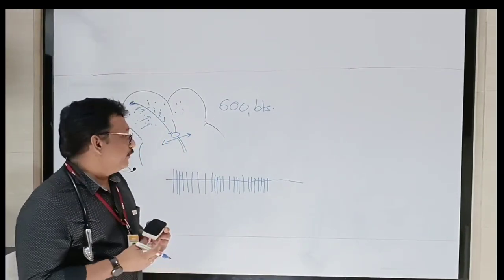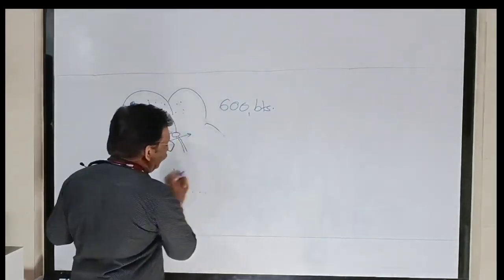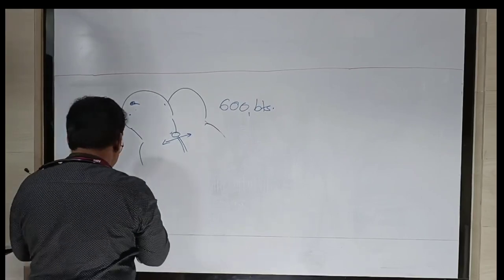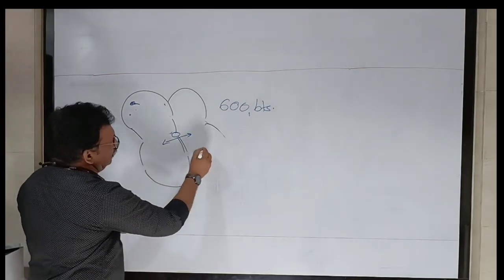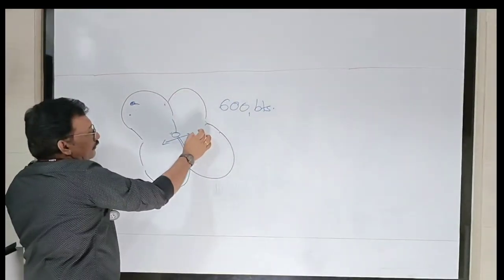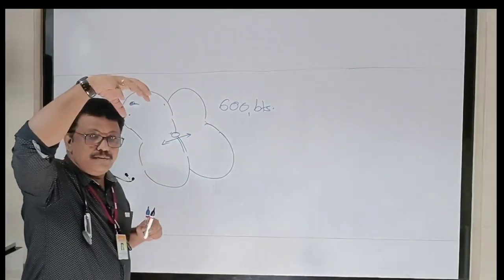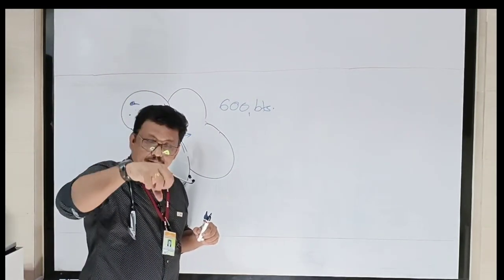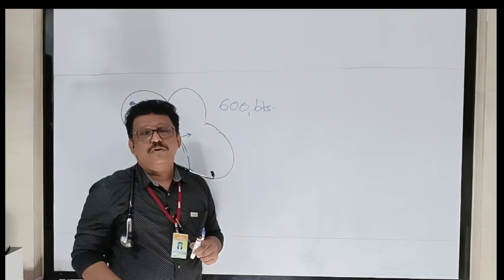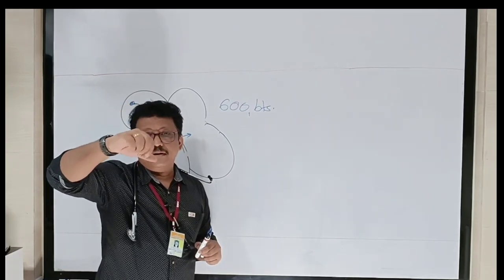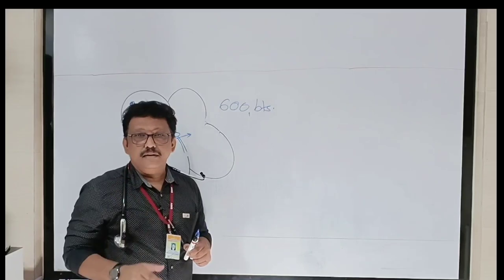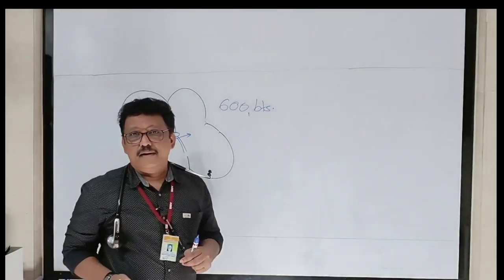Why are we worried about atrial fibrillation in the emergency room? The atrium — when the AV valves open during diastole — blood flows from the atrium to the ventricle. At the end of diastole the atrium contracts giving an atrial booster kick. If the atrium fibrillates, some blood may go to the ventricle but the proper contraction of the atrium never occurs, so the amount of blood reaching the ventricle is reduced, ultimately leading to reduced blood pumping from the left ventricle.